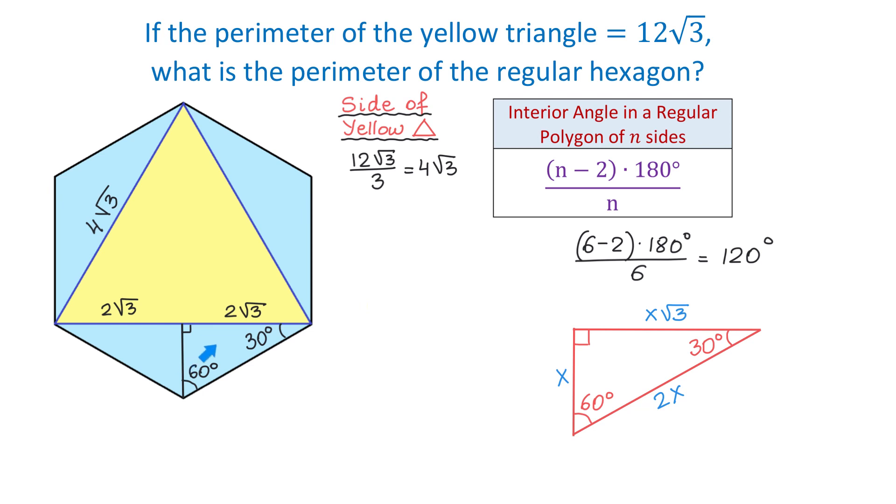In our triangle, if this side is 2 square root of 3, then this side will be 2, and the hypotenuse will be 4. So we just found that one side of the regular hexagon is 4 units.